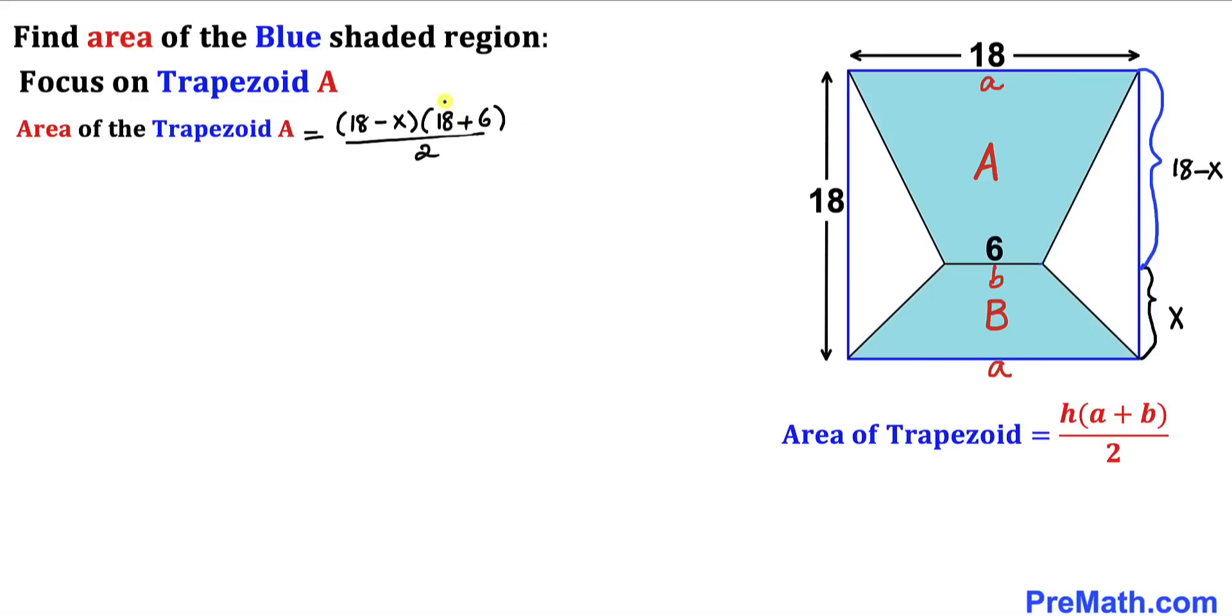Now let's go ahead and simplify this thing. 18 plus 6 is going to give us 24 times (18 minus X) divided by 2. And here they can reduce and we ended up with 12 times (18 minus X).